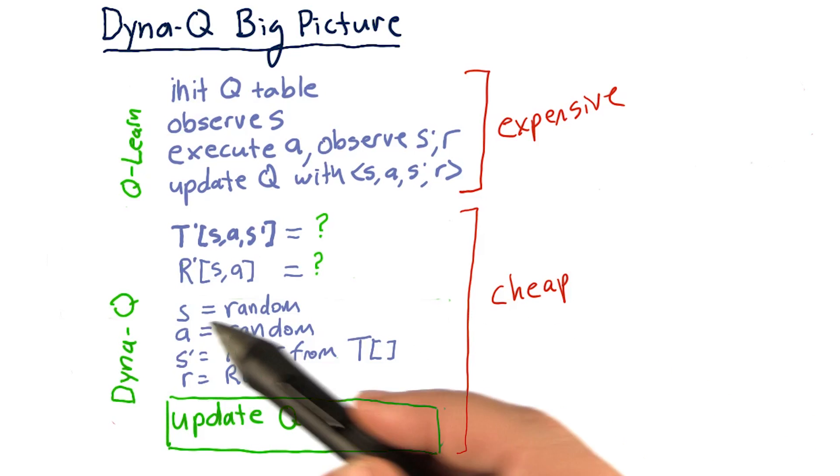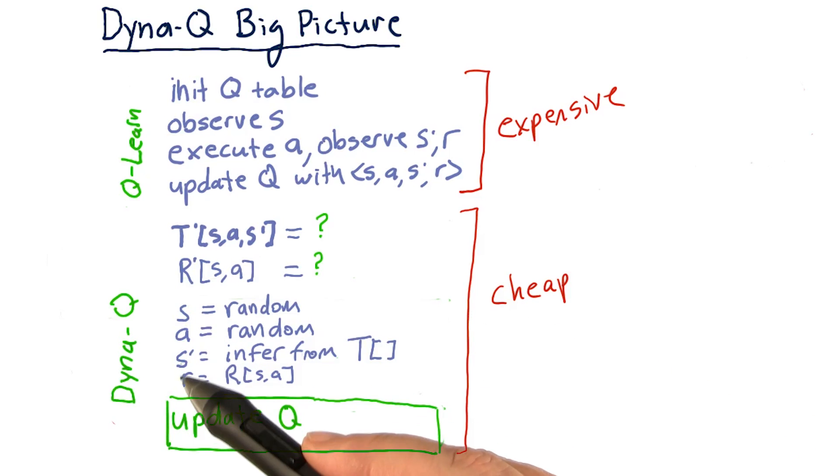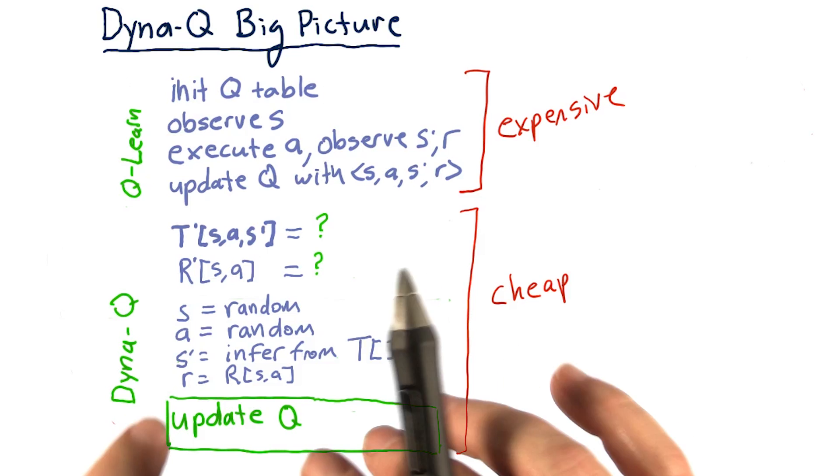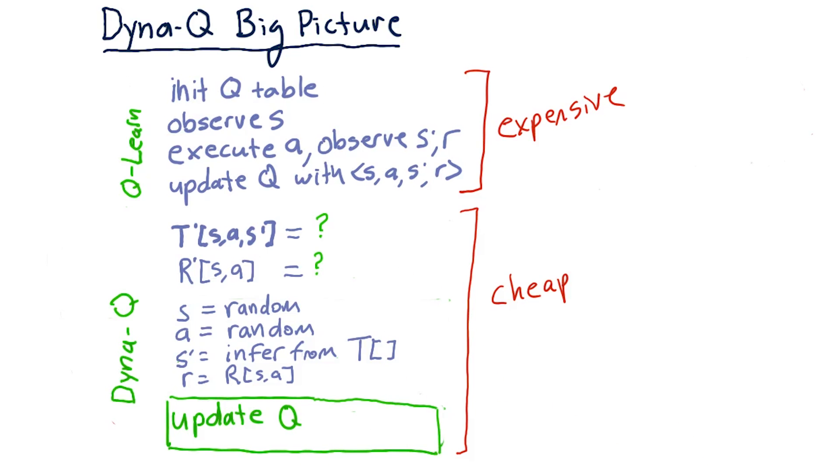So now we've got S, A, S prime, and R, or a complete experience tuple. And we can update our Q table using that.